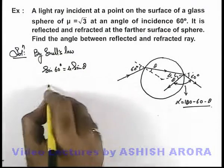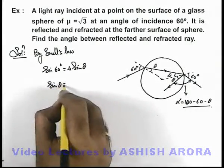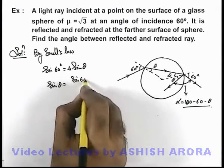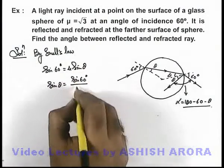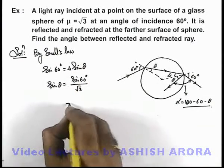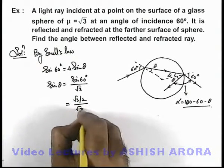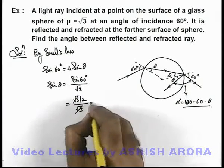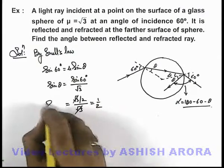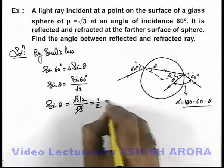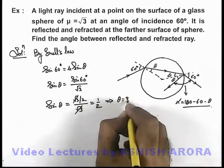The value of sin θ will be sin 60° divided by the refractive index, which is √3. On substituting the values, this will be (√3/2) / √3. √3 gets cancelled out, and the value of sin θ is 1/2. This implies the value of θ is 30 degrees.